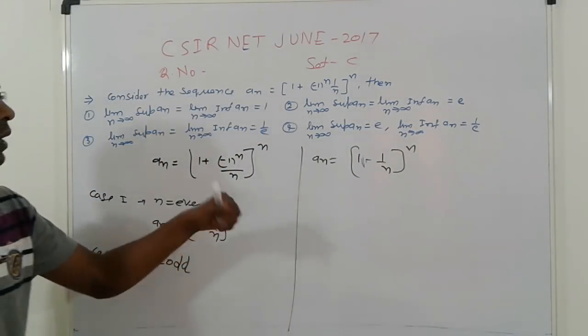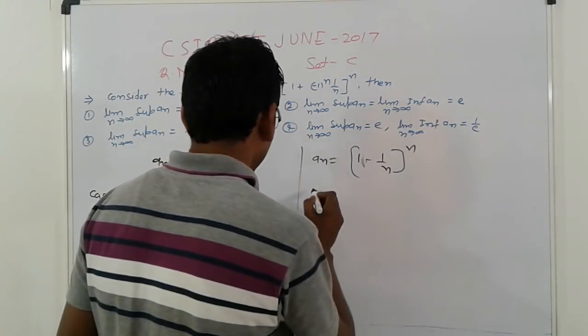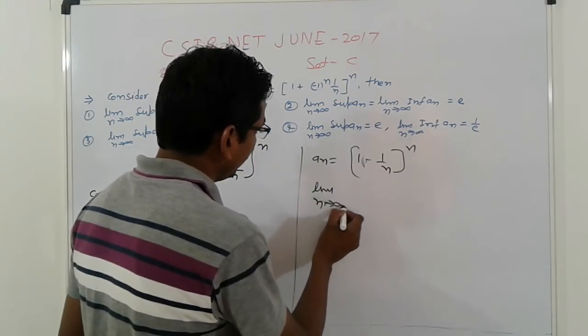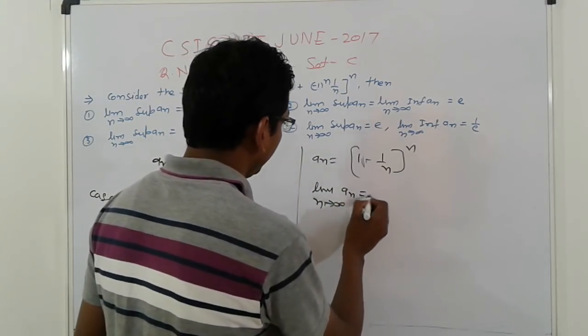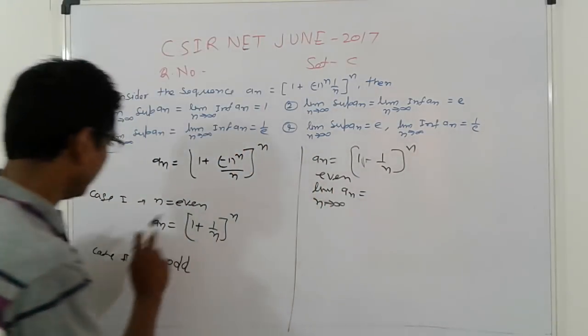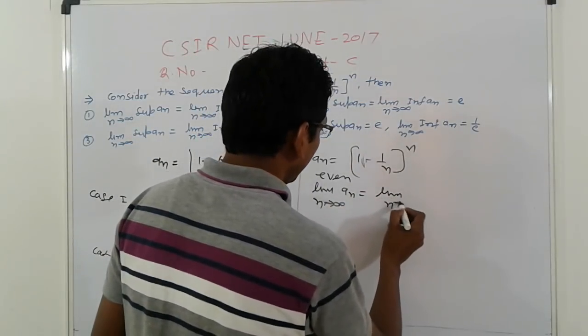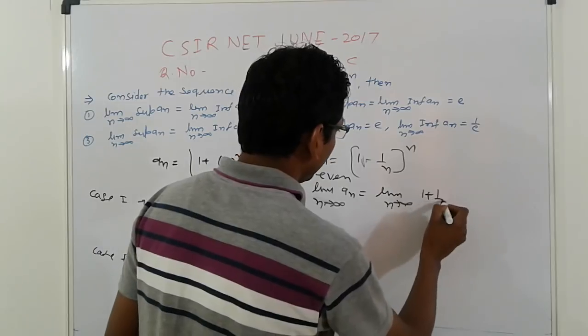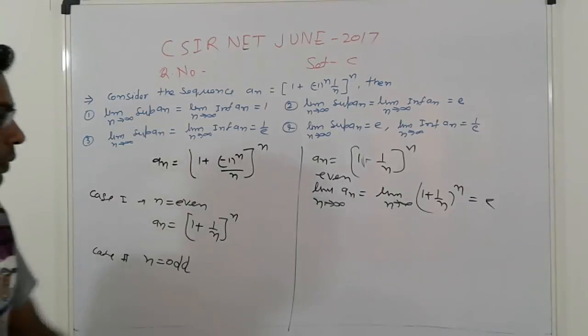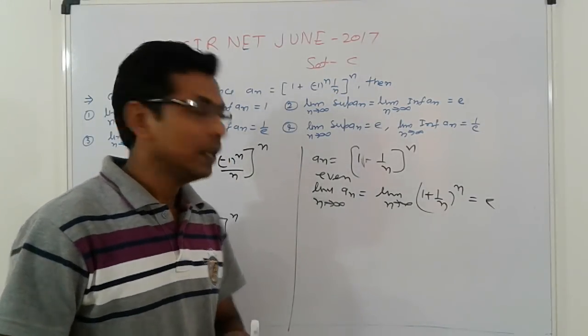Going to the limits. What is this? So first, if limit as n tends to infinity of An for n even: limit n tending to infinity (1 plus 1 by n) raised to power n, that is the value of e. Now remember, which is the value of e.